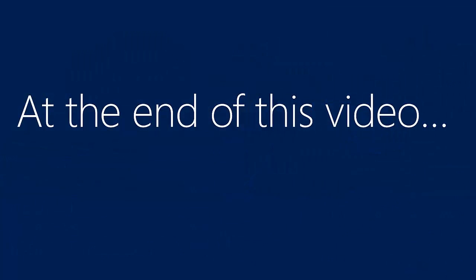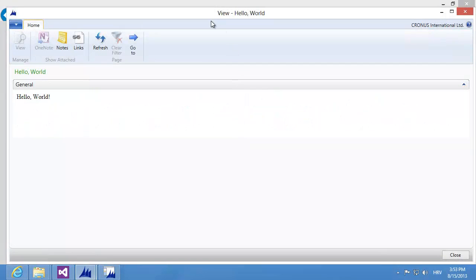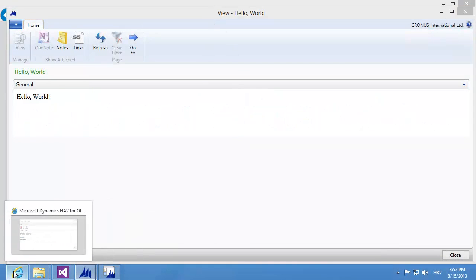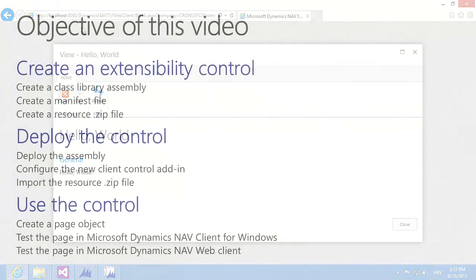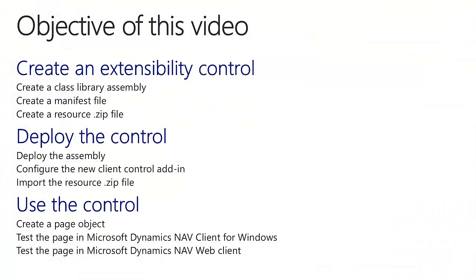At the end of this video, I'll have a simple client extensibility control add-in. It won't do much — it will merely print the words Hello World — but it will do that for both the NAV client for Windows and the web client. The objective of this video is to show how to use a new feature in NAV 2013 R2, which is creating extensibility controls compatible with both the Windows and the web client.